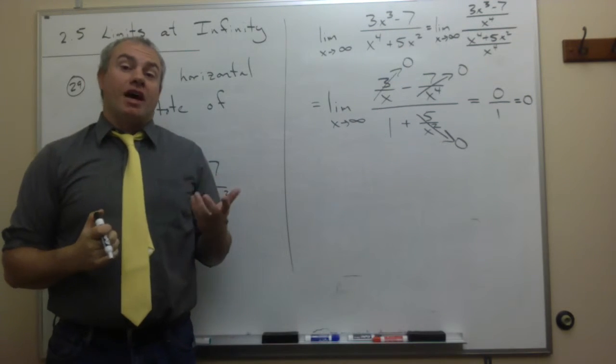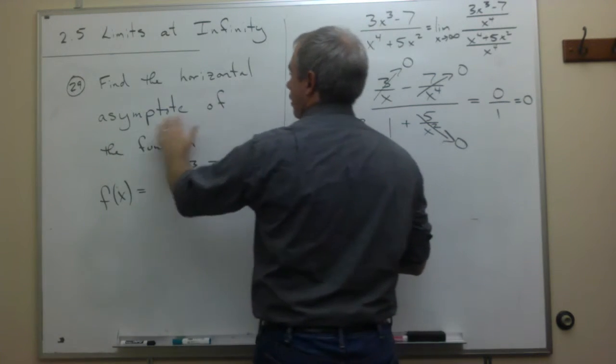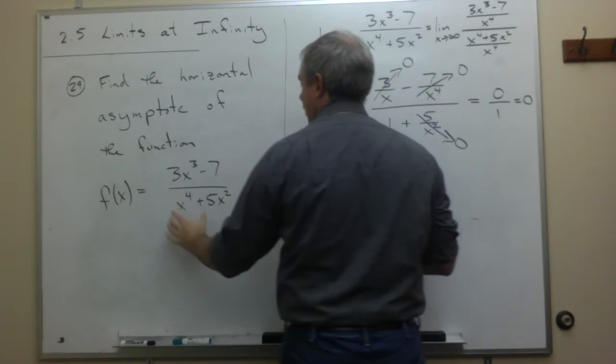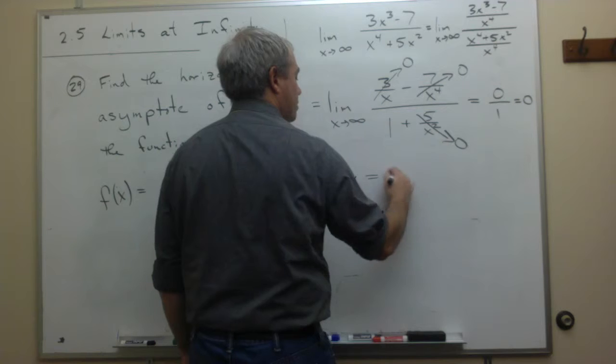So we end up with a value 0. And if we want to answer the question, what's the horizontal asymptote of this function, then we get that y equals 0.